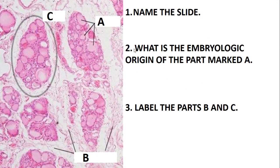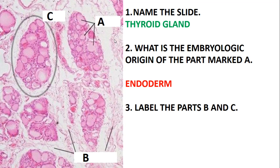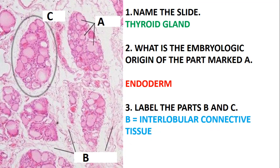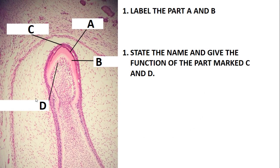Name the slide. This is the same slide where we looked at the parathyroid and thyroid, but now focused on the thyroid gland. You can see some lobules — the whole structure is the lobule — and there are follicles as well, so this is the thyroid. The embryonic origin of the follicles marked A is the endoderm. Part B is the interlobular connective tissue, and C is the lobe. A is the follicles.